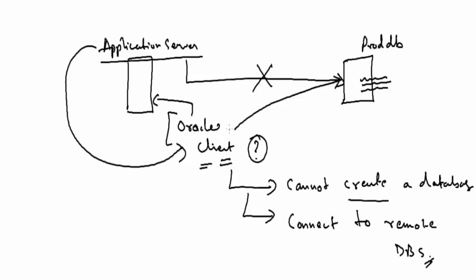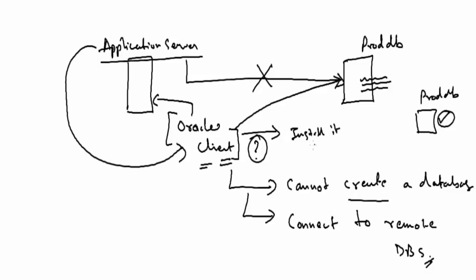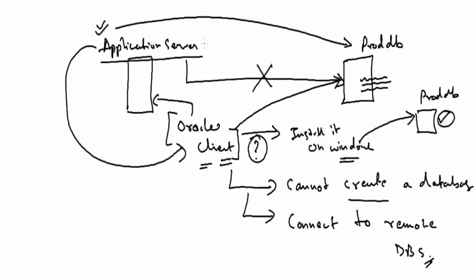To learn and understand Oracle networking, what we will be doing is: our database server, that is proddb, is installed on a virtual machine. I will go ahead and download the Oracle client and install it on my Windows machine, and from our Windows machine we will use Oracle client to query inside proddb. We will actually connect from Oracle client to our production database from the Windows machine. This is how things work in real time — whenever there is an application deployment on any server that will be talking to a database server remotely, on the application server itself you need to install the Oracle client.